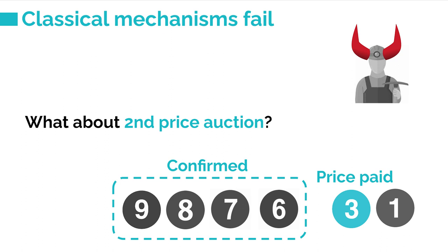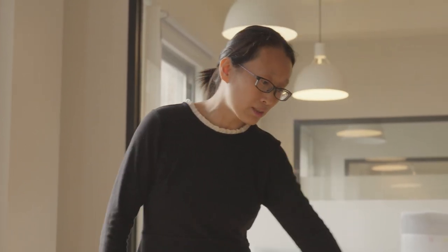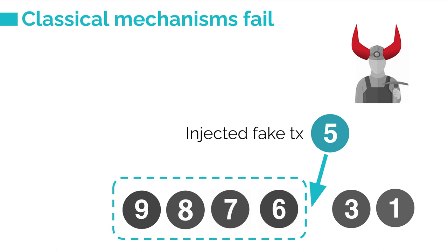How would you run the second price auction here? Let's say your block wants to confirm four transactions. So you take the top four, and they pay the fifth price — a generalized version of the second price auction. But the issue is that even the auctioneer itself can be a strategic player. For example, the miner can inject a bid of five, making five the fifth transaction, so everyone pays five and the miner earns more.